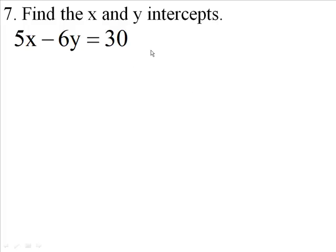Number 7, find the x-intercepts and y-intercepts. The equation is 5x minus 6y equals 30. If we let x be 0, let's see what this gives us here.